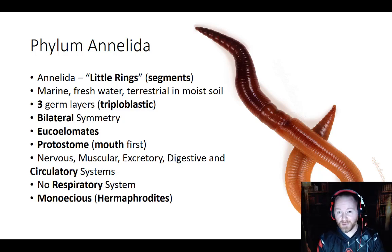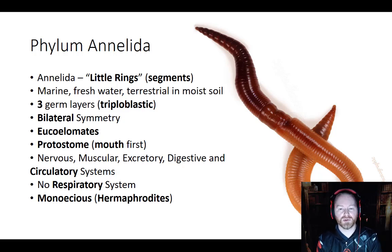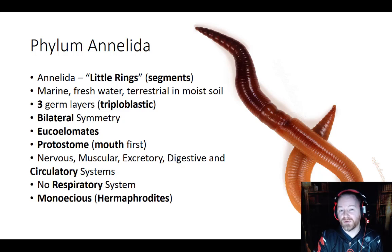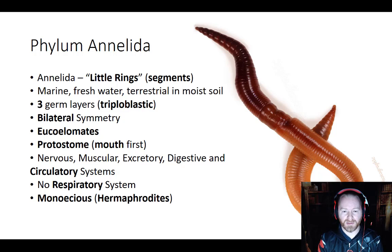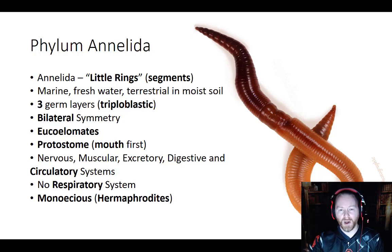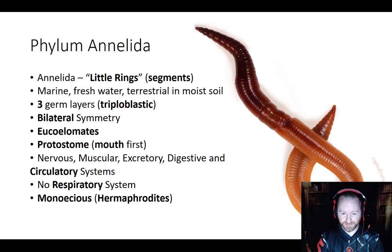Annelids can be marine, some are freshwater, but we also start seeing some that are much more terrestrial. With a lot of the other phyla we've covered, they've almost all been marine, a few are freshwater. With nematodes we had a few that actually live on land, but now we're starting to get into a different environment for organisms — we're on land more often, and that's going to require other systems to evolve.